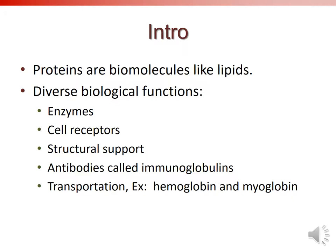Proteins also serve as structural support — collagen and fibrin, for example, give integrity to skin, tendons, ligaments, and muscle tissue. Antibodies, called immunoglobulins, are part of the immune system and are proteins too. Proteins can also be involved in transportation. Hemoglobin is a protein molecule with a site where oxygen binds to iron, and it transports oxygen around the body. Myoglobin is a muscle-based oxygen transporter as well.